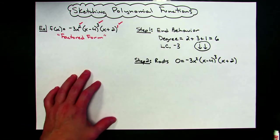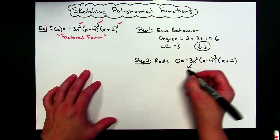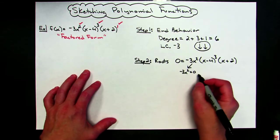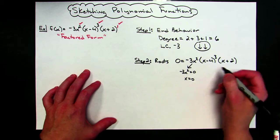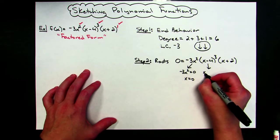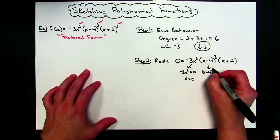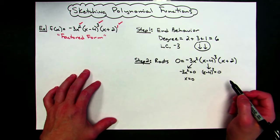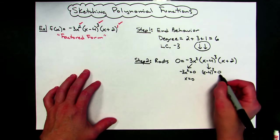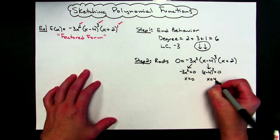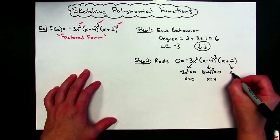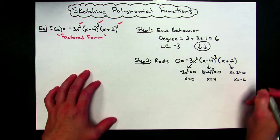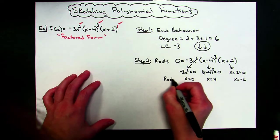All right, in factored form, all I have to do to find the roots is set each one of these equal to zero. So I'm going to set negative three x squared equal to zero. Divide both sides by negative three, take the square root, x equals zero. On the middle term, I'm going to set x minus four to the third power equal to zero. I would cube root both sides. That's going to get rid of the three right there. Cube root of zero is still just zero. I can add four to both sides then. x equals four. And when I set the last one equal to zero, x plus two equals zero. That's just going to give me x equals negative two.